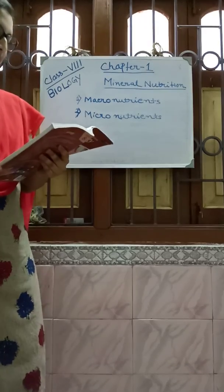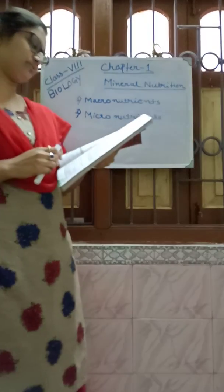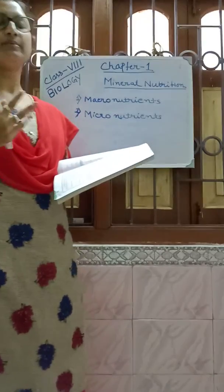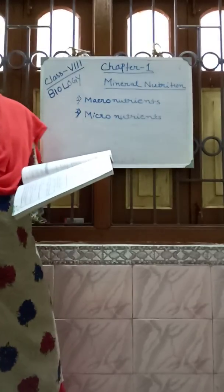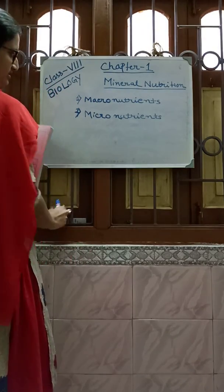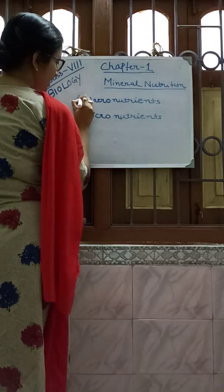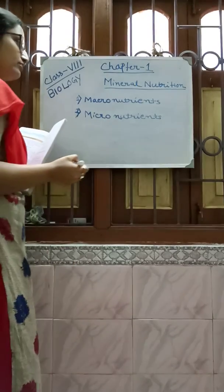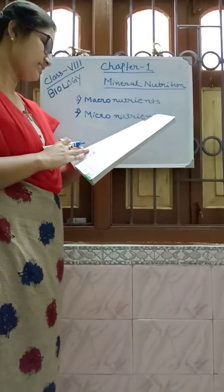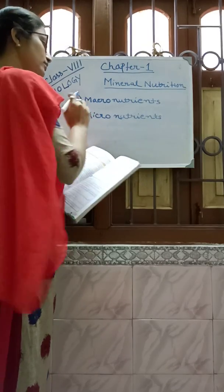Some mineral nutrients are required by the plant in large quantities — these are called macronutrients. When required in only small or trace quantities, they are called micronutrients.